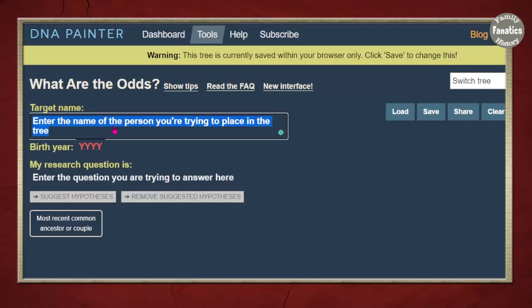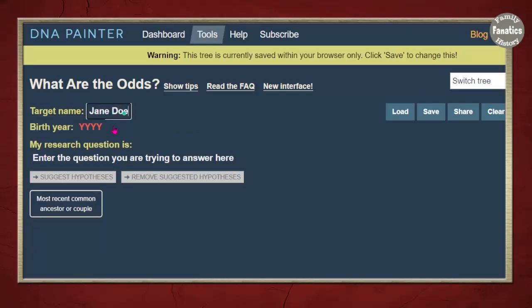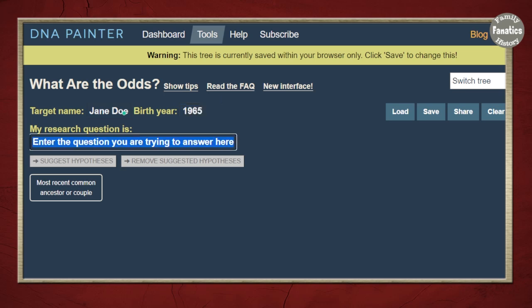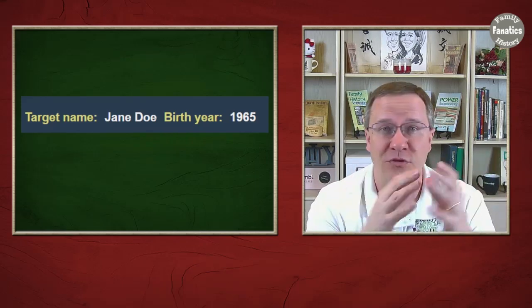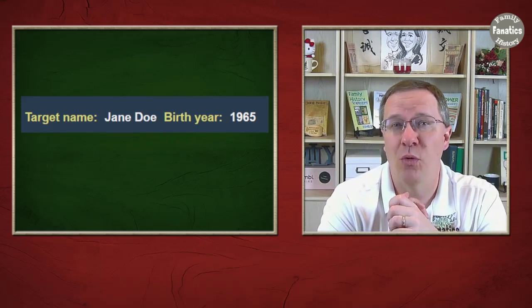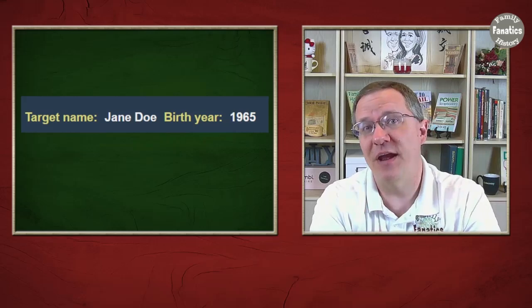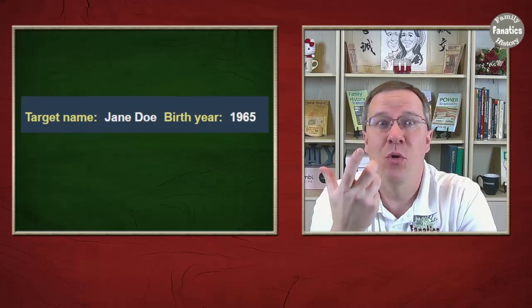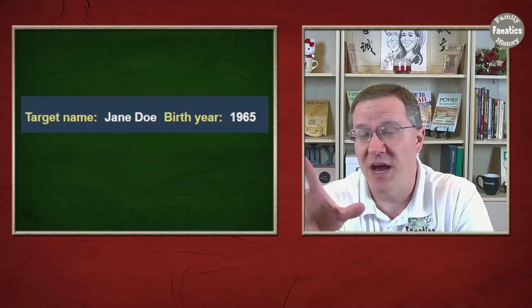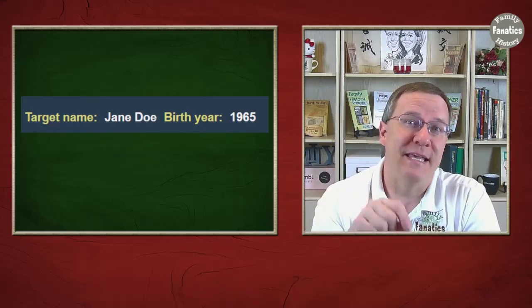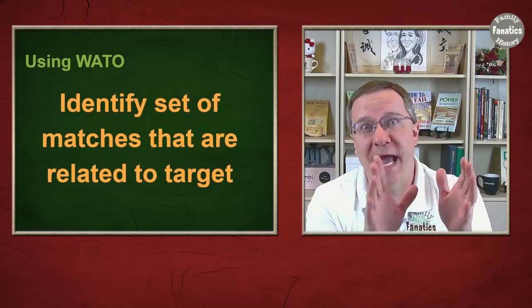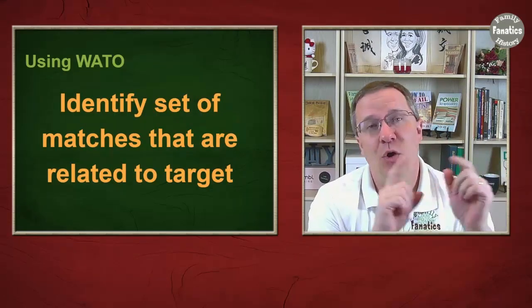I'm going to start off in the WATO tool and name my target person as Jane Doe. It has you enter in a birth year if you know the birth year, and if this is yourself or somebody else close to you, you probably do know what the birth year is. This can be very helpful in narrowing down where the target person fits into the family tree because you know when they were born, and if you know when some of the other people were born, that can give you a clue besides just the DNA.